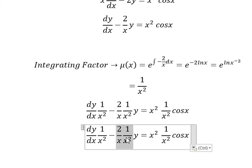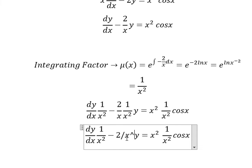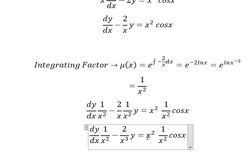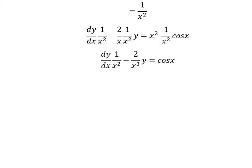That means we multiply both sides by this one. So this one we have 2 over x to the power of 3. This one we simplify. Next we need to integrate both sides.